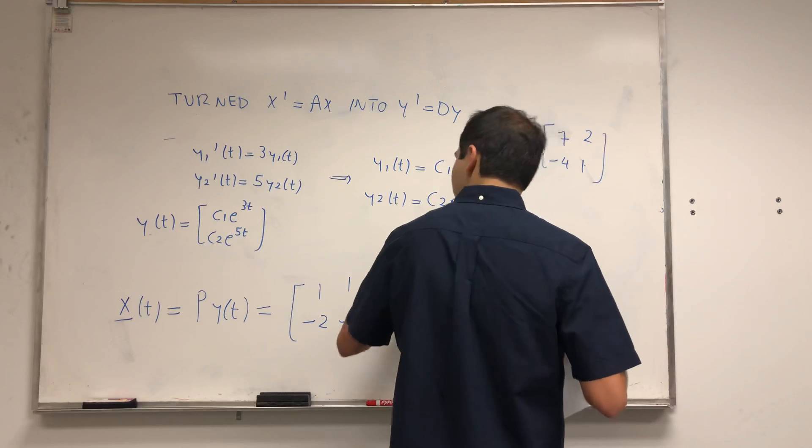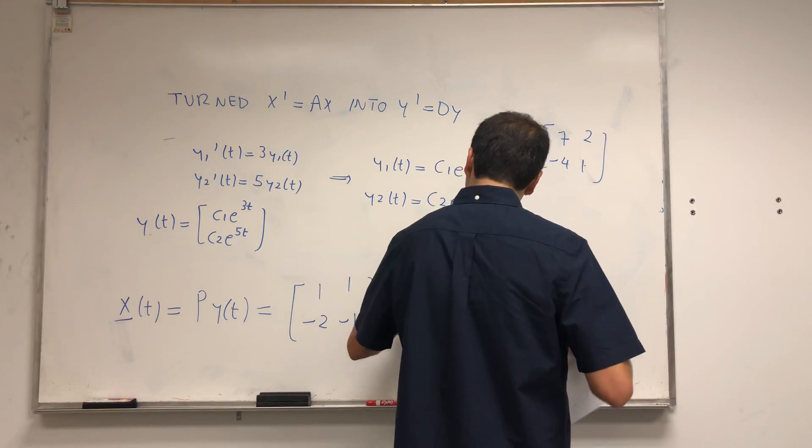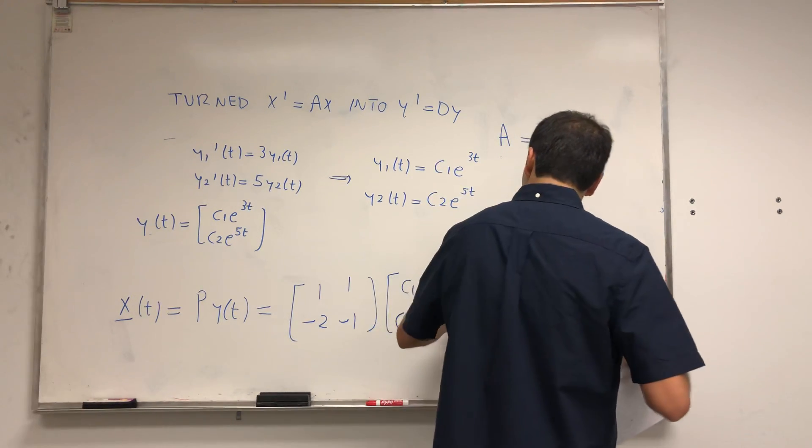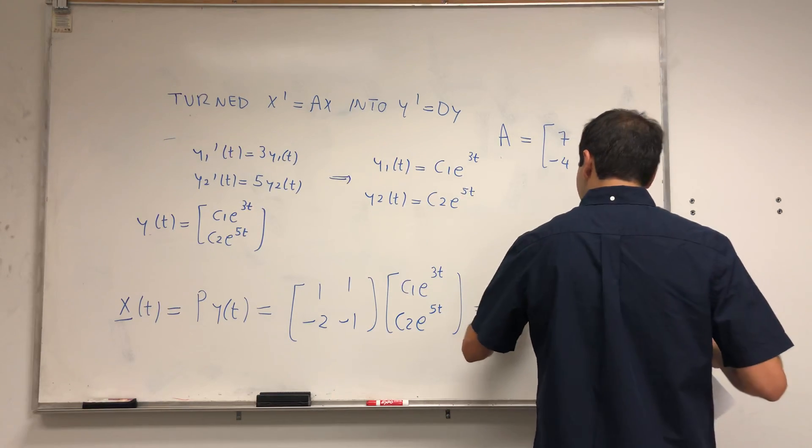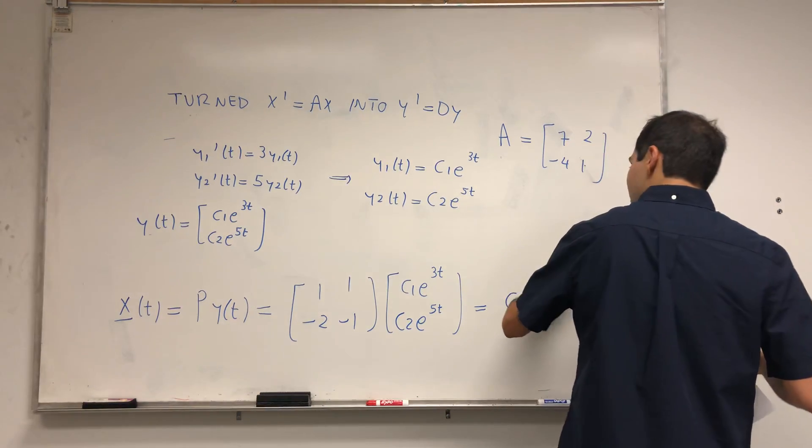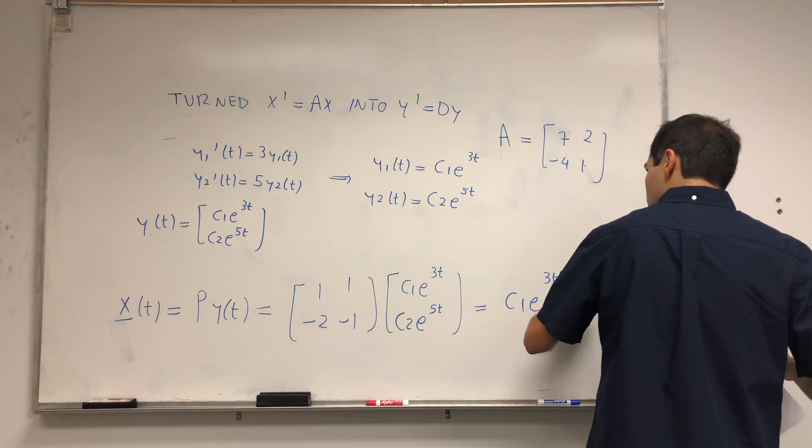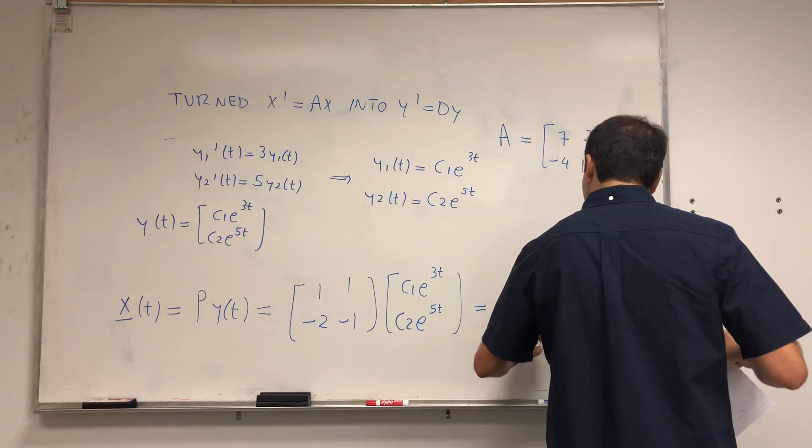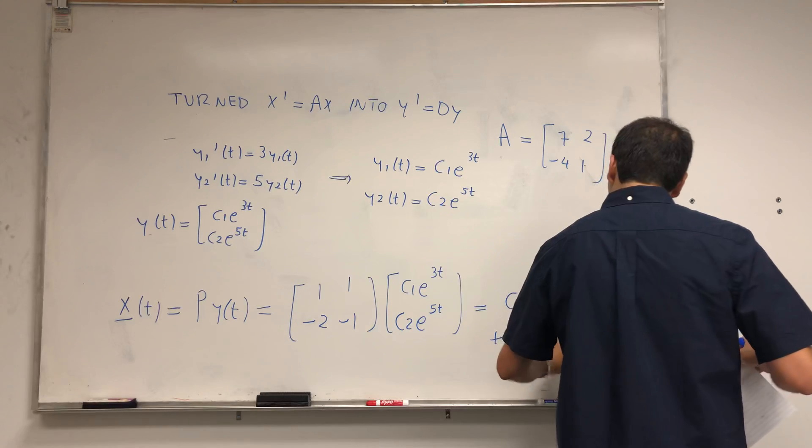And P, I want to remind you, is [1, -2; 1, -1] times y of t, which is [c1 e to the 3t, c2 e to the 5t]. If you want, it's the same thing as c1 e to the 3t times [1, -2] plus c2 e to the 5t times [1, -1].